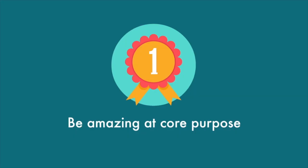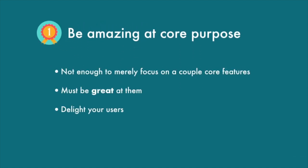Next, be amazing at the core purpose of your app — a rewording of 'pick one thing and do it well.' It's not enough to merely have a vision and say you're just going to focus on core features. The core features that you have need to be awesome, great, amazing, easy to use, as frictionless as possible. This will really delight your users. In fact, if you really nail this, people will love your app and they won't even be able to necessarily articulate why — it's just this feeling: 'This app just gets me, it gets how I think.' And that's really powerful.